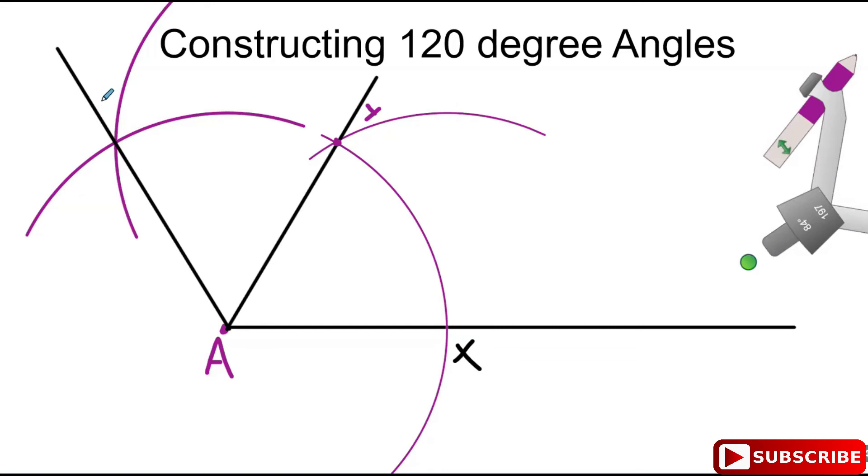This is point P. All of this angle right here is 120 degrees. Angle PAX equals 120 degrees. That's how we construct a 120-degree angle.